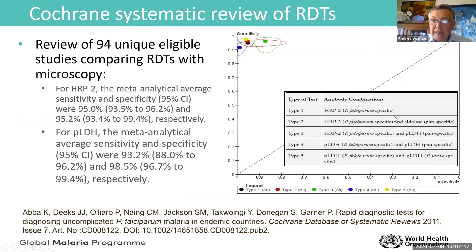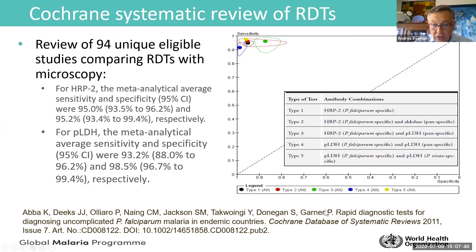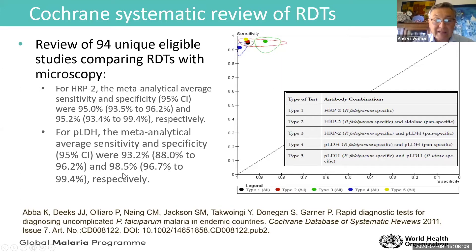A thorough Cochrane review analyzed 94 eligible studies comparing microscopy and RDTs. It shows that HRP2-based tests have 95% sensitivity and around 95% specificity. The pLDH test has slightly lower sensitivity at 93%, but specificity goes up to 98%. In both cases, the diagnostic performance is very high.